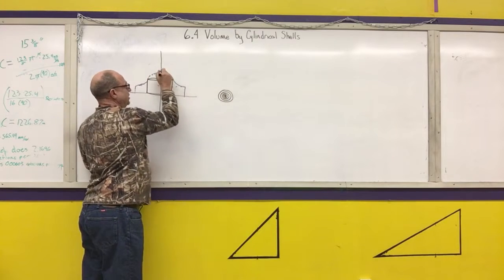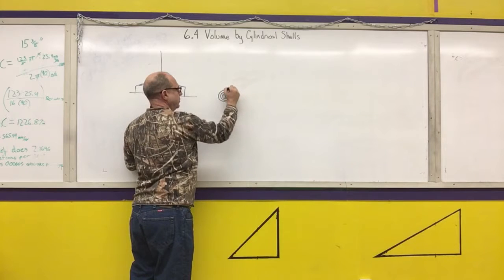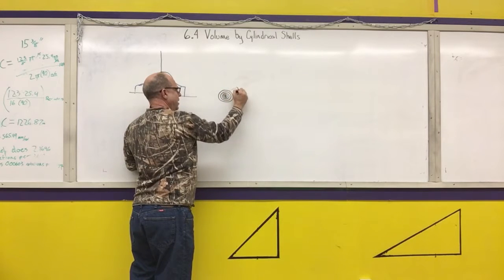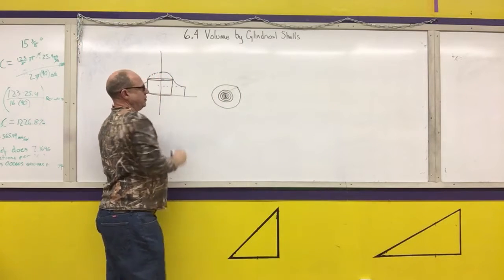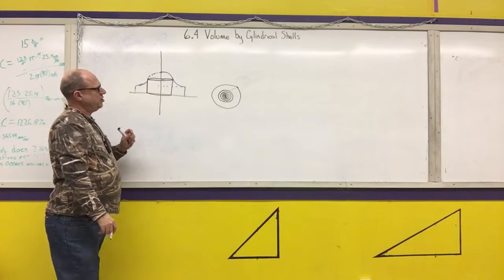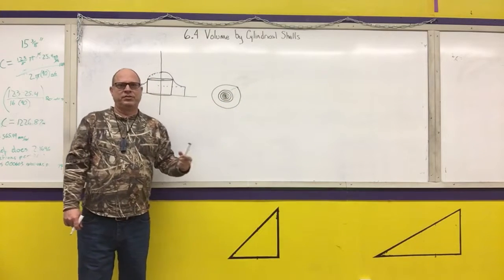The center cylinder is going to have this height. The outer cylinders, so if I go out here, the outer cylinder is going to have this height. And then what I want to do is I want to add up the volumes of each one of those cylinders.